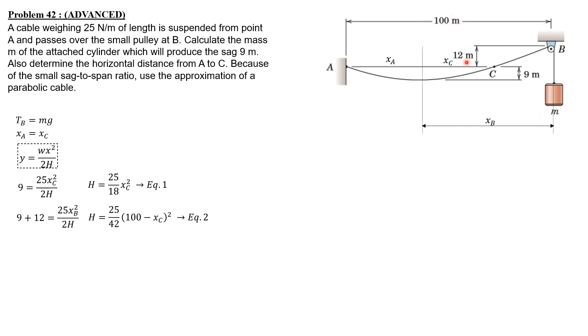So H is 25 over 42 of quantity 100 minus X_C squared, because X_B is 100 minus X_A and X_A equals X_C. Equating equations 1 and 2, then simplifying we have 7 X_C squared equals 3 quantity 100 minus X_C squared. Expanding, 7 X_C squared equals 30,000 minus 600 X_C plus 3 X_C squared. So 4 X_C squared plus 600 X_C minus 30,000 equals 0.